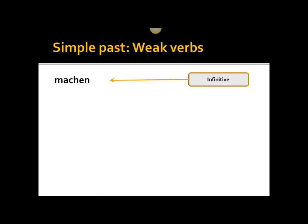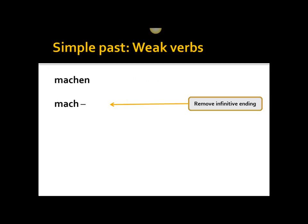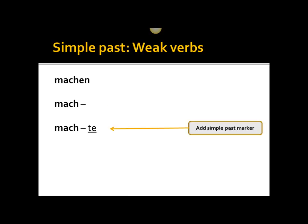To form the simple past, I'll use a regular, run-of-the-mill weak verb: machen, to make. We start with the infinitive form — the form you find in the dictionary. What we want to do is remove the infinitive ending, which gives us the verb stem: mach. After we have the stem, we add what I call a simple past marker: mach-te. This shows that the verb is now in the simple past tense.